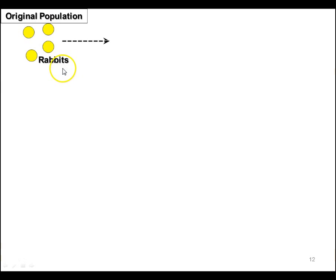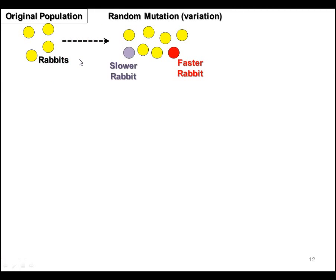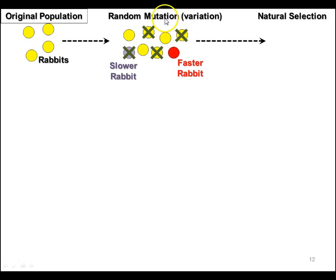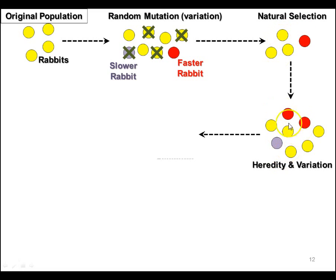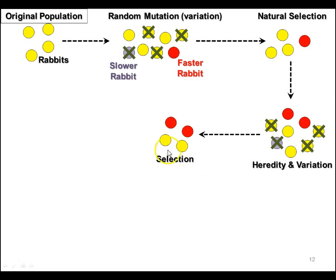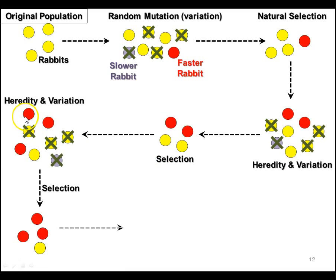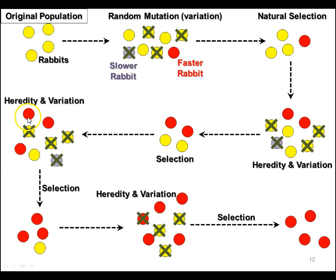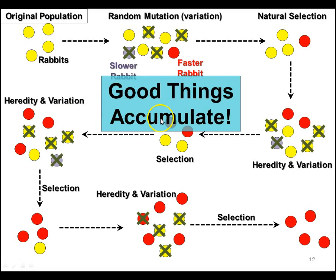You've seen this before with rabbits. Let's focus on the variation, selection, and heredity. Here we have variation — some differences, some faster, some slower. Then you introduce selection, which is not random who survives. The mutation was random; the selection is not. Only the fastest get to survive. And there's that random variation, but they pass on their traits. The offspring look like the parents. Remember, those three parts — variation, selection, and heredity — means that good things accumulate. Trial and removal of error: the good things stuck around, the bad ones didn't make it.